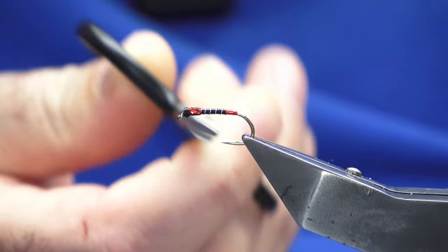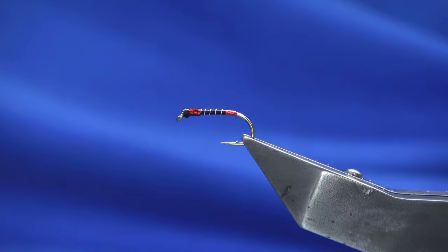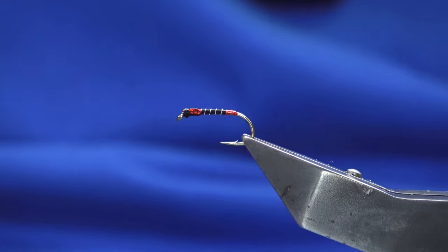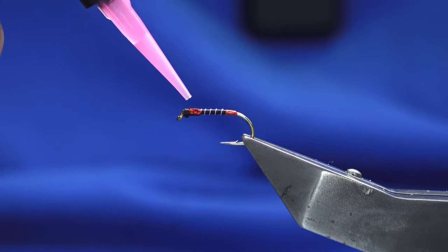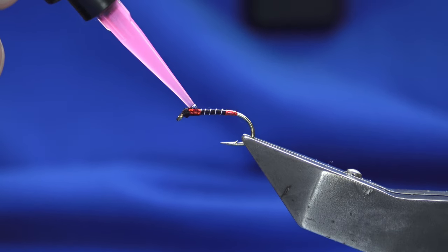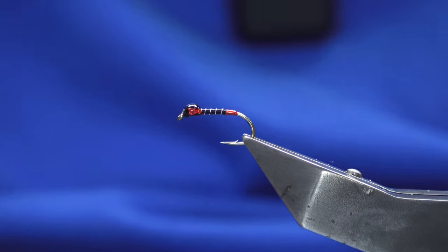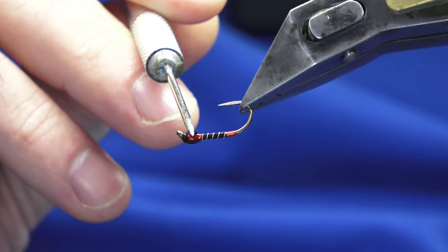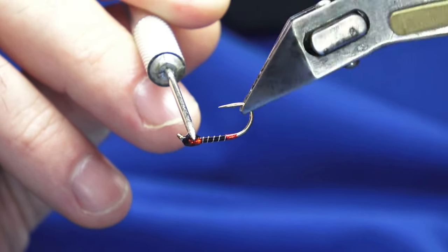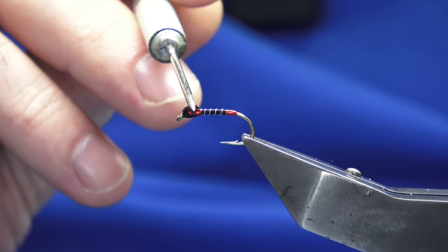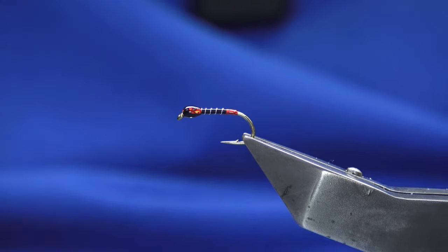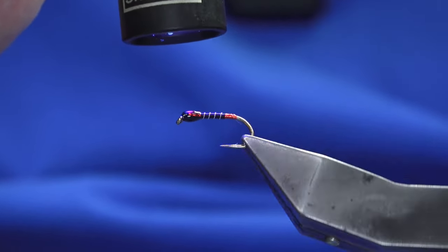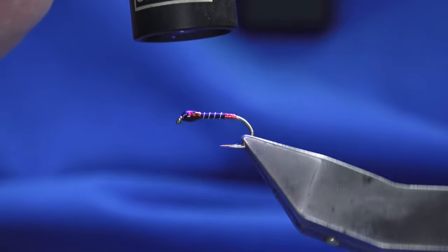Pull the thread tight and trim away. We're going to protect everything - you could use super glue, or in this case I'm using thin UV resin. I always start with the thorax area, then come in with my needle and move this around until I'm happy with the shape. Then light it up with a torch to make sure it's well cured.